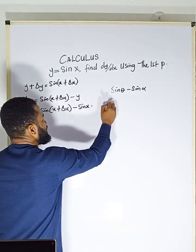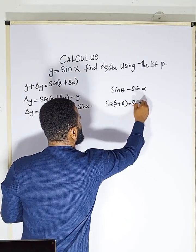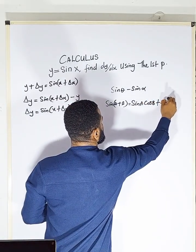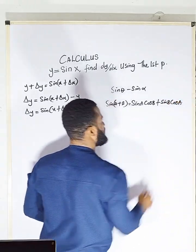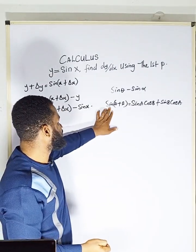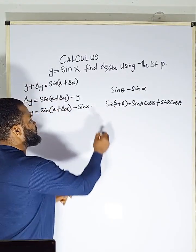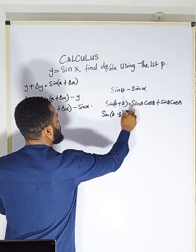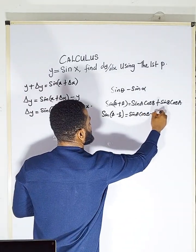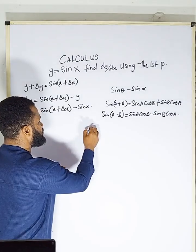Let's go to the fact that sine(A + B) equals sine A cos B plus sine B cos A. This is provable. Similarly, if you have sine(A − B), you get sine A cos B minus sine B cos A.